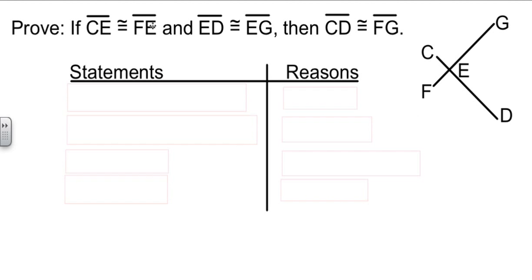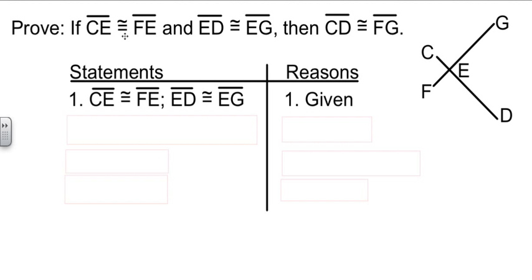Well, we know where we're starting with the hypothesis. CE is congruent to FE, and ED is congruent to EG. And our reason for that is that was given to us. That's the hypothesis. So it's given.